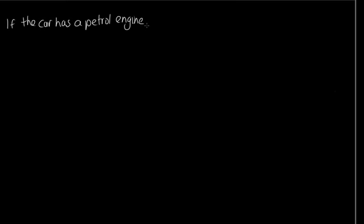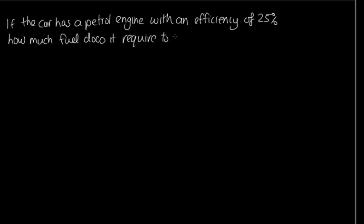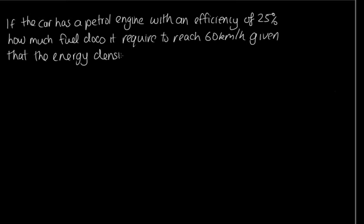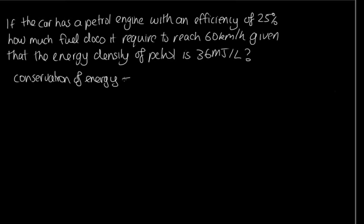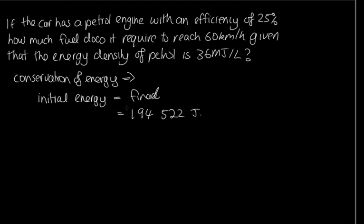The question continues: if the car has a petrol engine with an efficiency of 25%, how much fuel does it require to reach 60 kilometres per hour, given that the energy density of petrol is 36 megajoules per litre? To answer this, we'll use conservation of energy: the initial energy equals the final energy. The final energy is kinetic energy, which we calculated as 194,522 joules. We should keep all significant figures during working and round at the end.